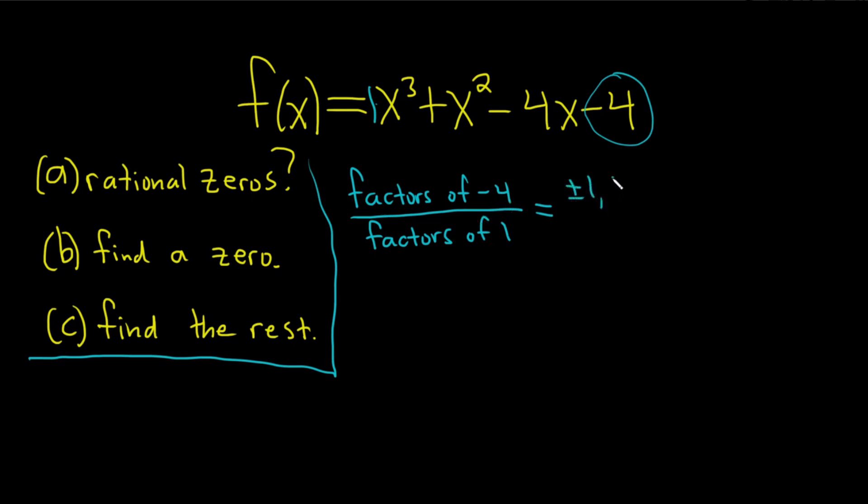Over the factors of 1, which is just plus or minus 1. Again, it's always the last one over the first one. The constant term over the leading coefficient. And don't forget the plus or minus. So 1 over 1 is 1. So we have plus or minus 1. 2 over 1 is 2. 4 over 1 is 4. So this is the answer to part A. These are the possible rational zeros.